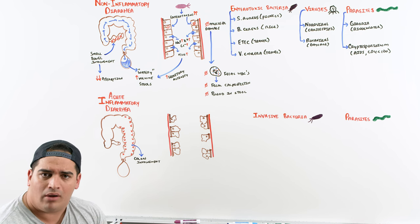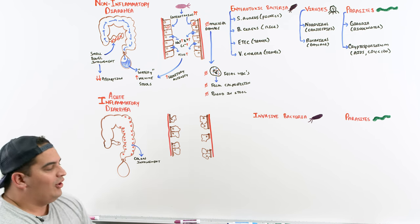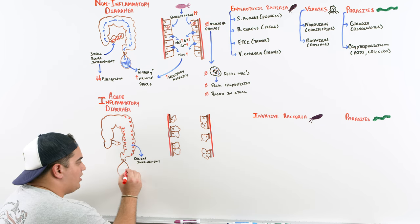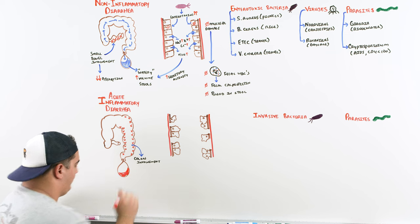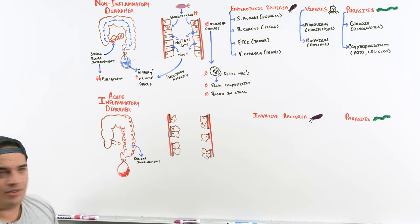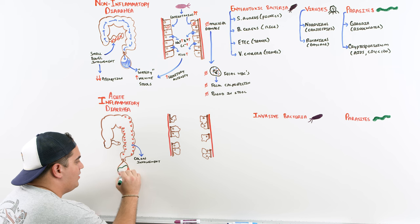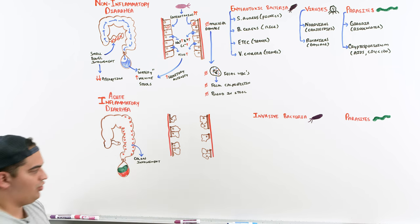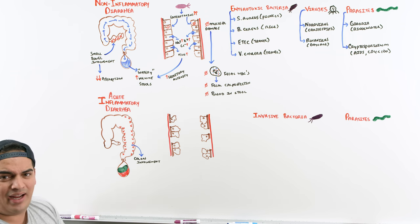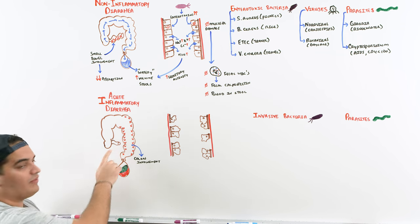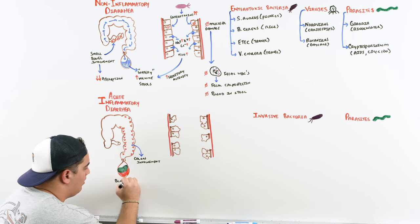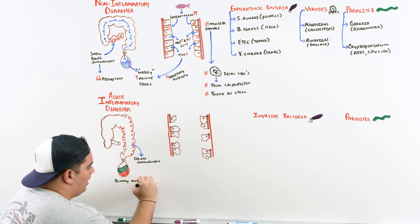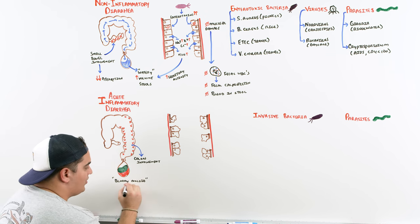Because the colon is involved, the stool won't be the super high-volume type. Instead, the stool will be bloody and mucoid — it'll look stringy with a bloody tinge. Since the small intestine is preserved, it won't be a high-volume stool.